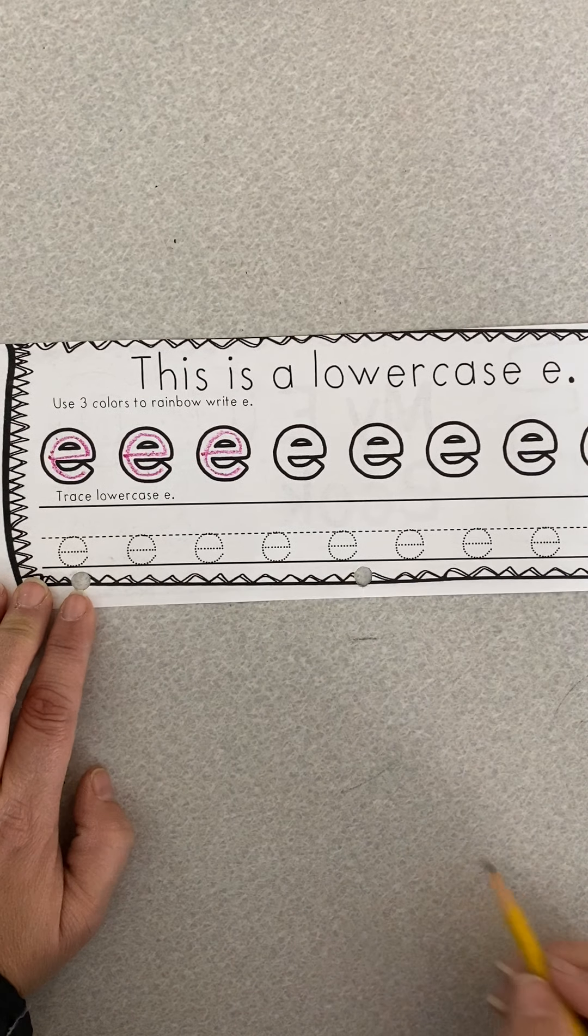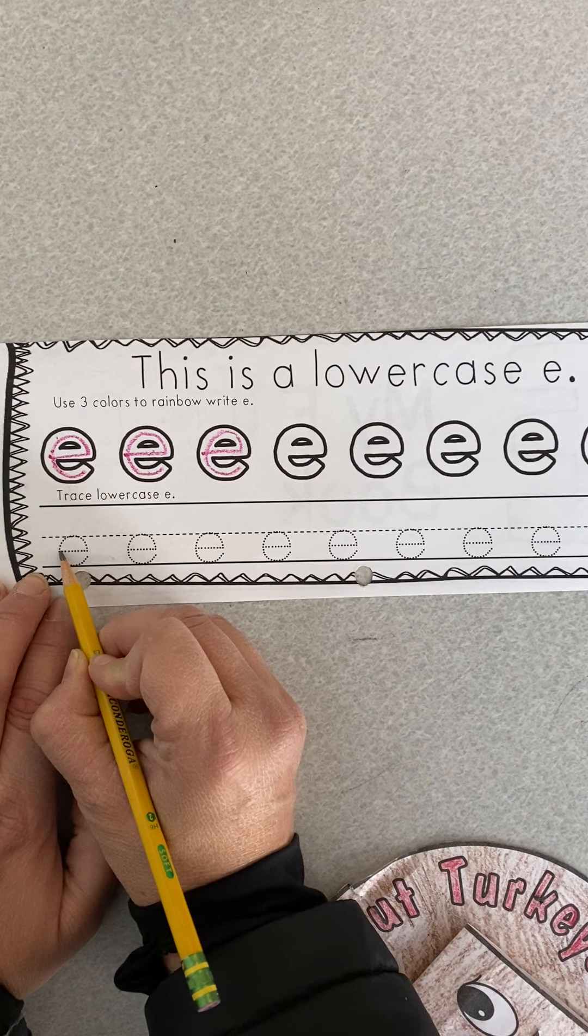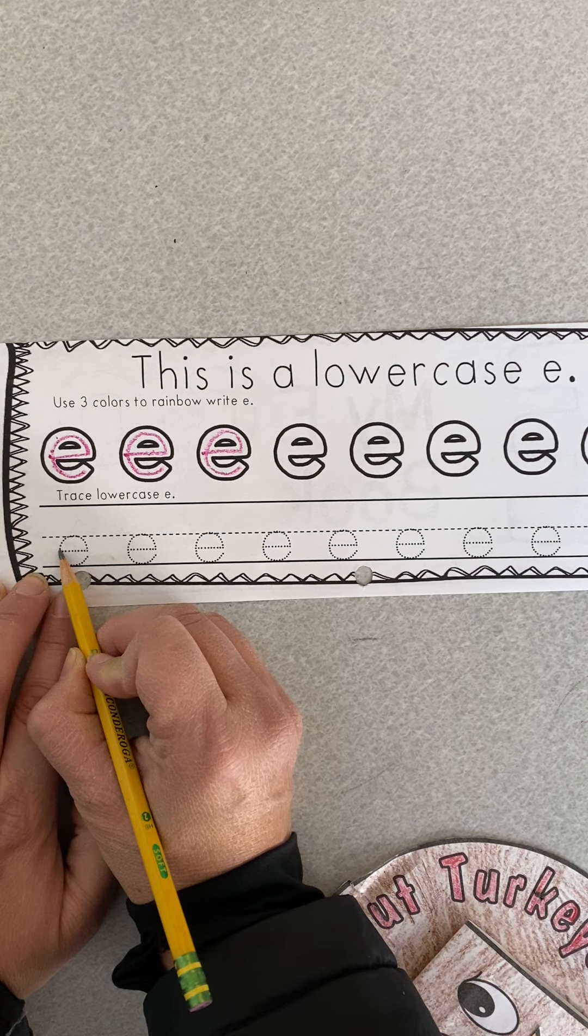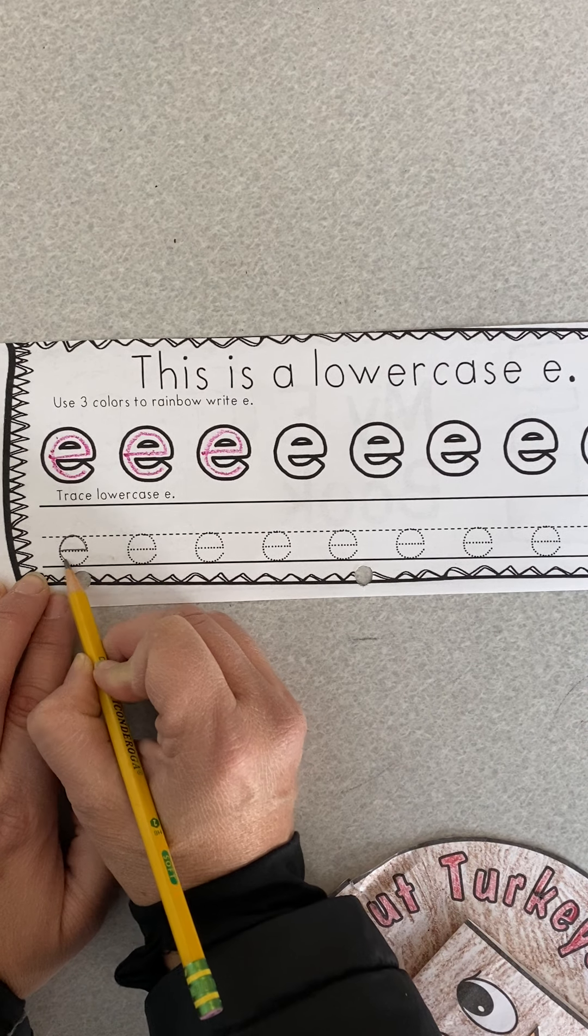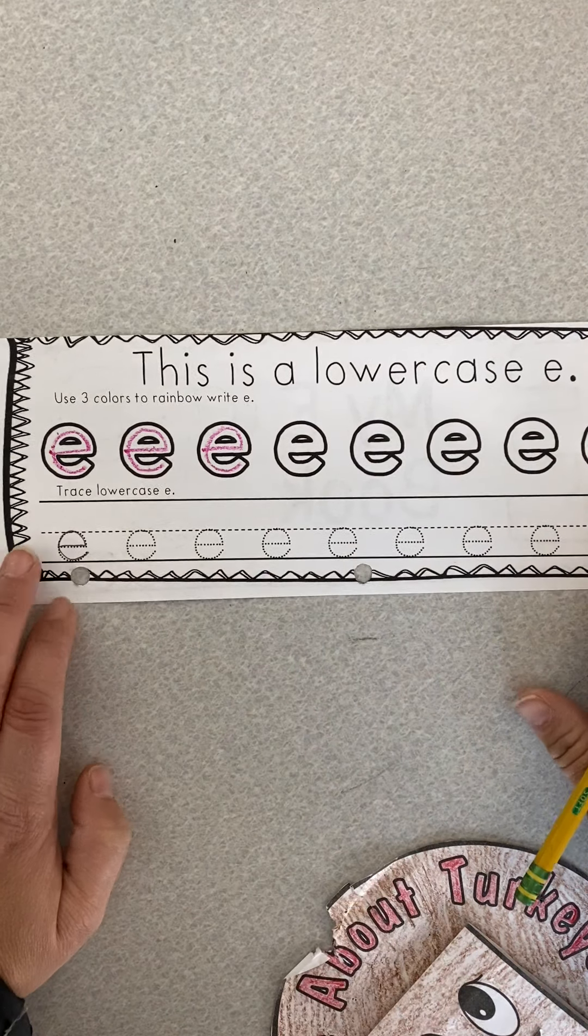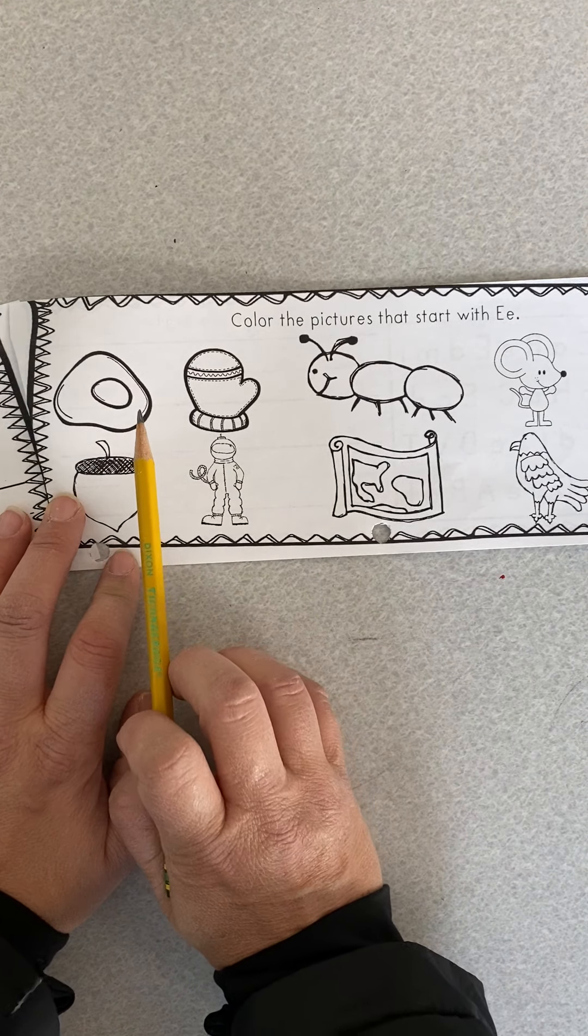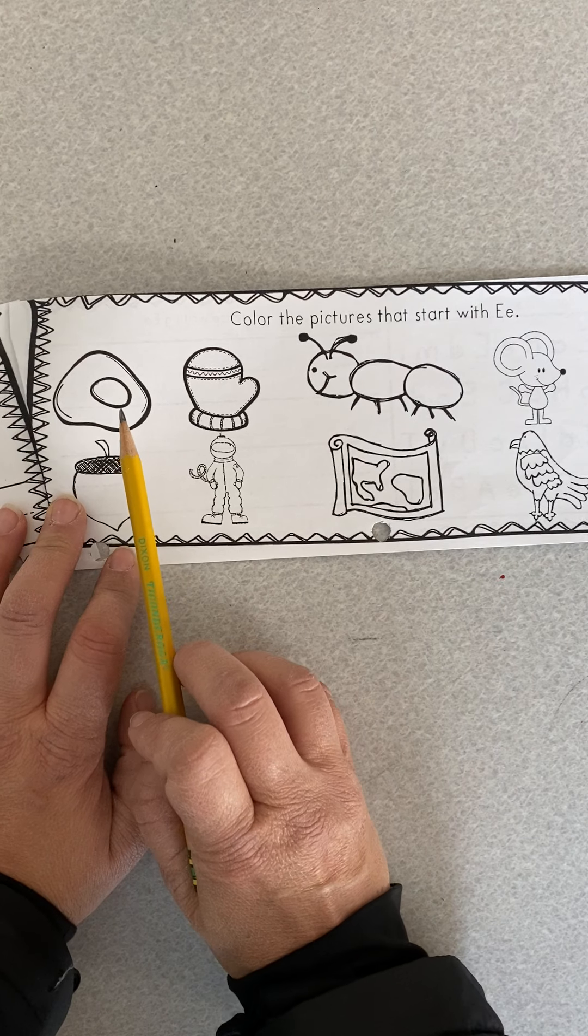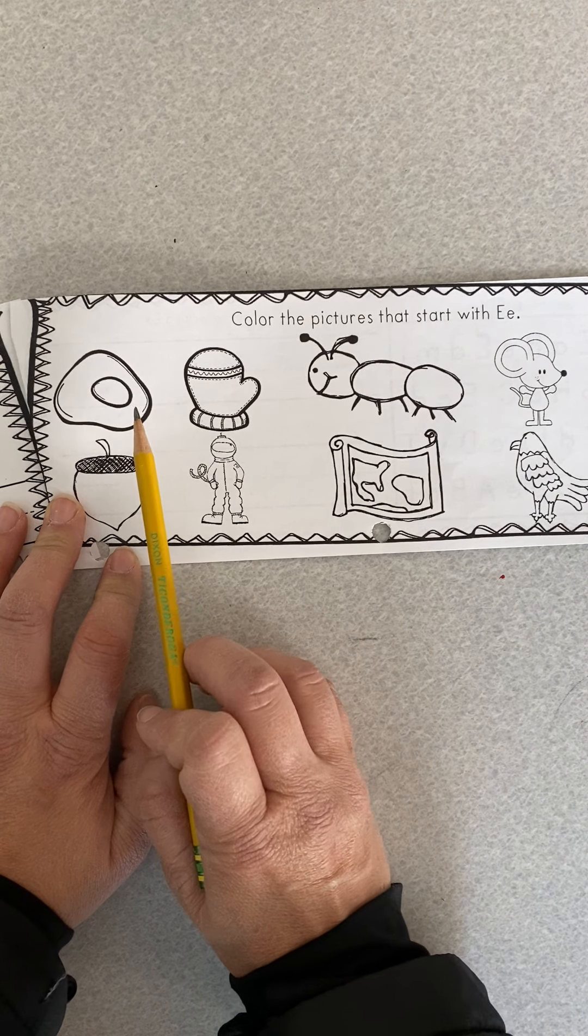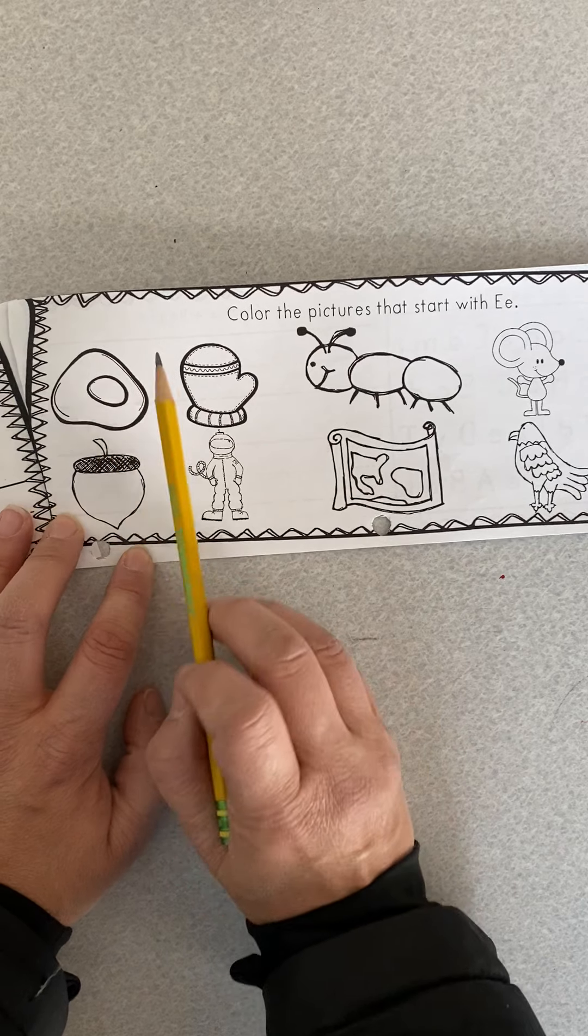Three colors all the way across. Then same for your pencil E's. Dotted line. Hit the ball, run around the bases and stop. All the way. Then we're going to look at our pictures. We are looking for things that start with the letter E. Most of the time they're going to say eh, but there's a tricky one in there that I'll tell you about.